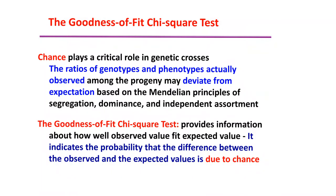Let's talk about the chi-square test — what it is and where we use it. First, you have to realize that chance plays a critical role in genetic crosses. Why? Because we do not live in a perfect world, and it's almost impossible to perform a perfect experiment.